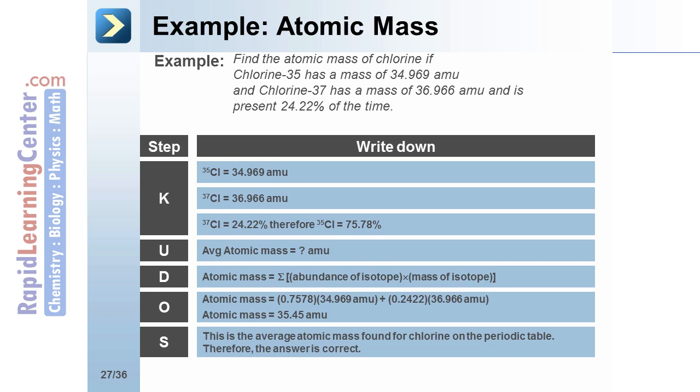Step S: Substantiate. This is the average atomic mass found for chlorine on the periodic table. Therefore, the answer is correct.